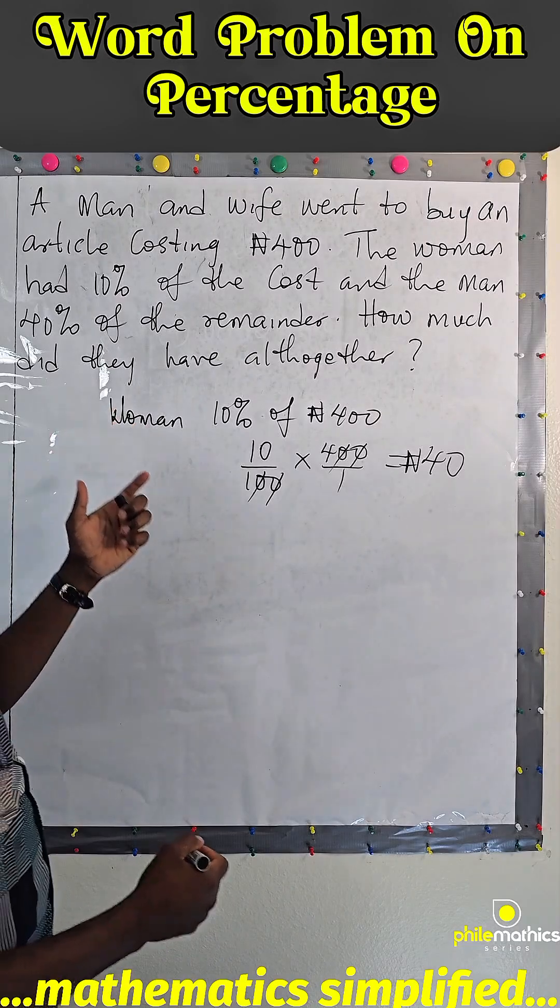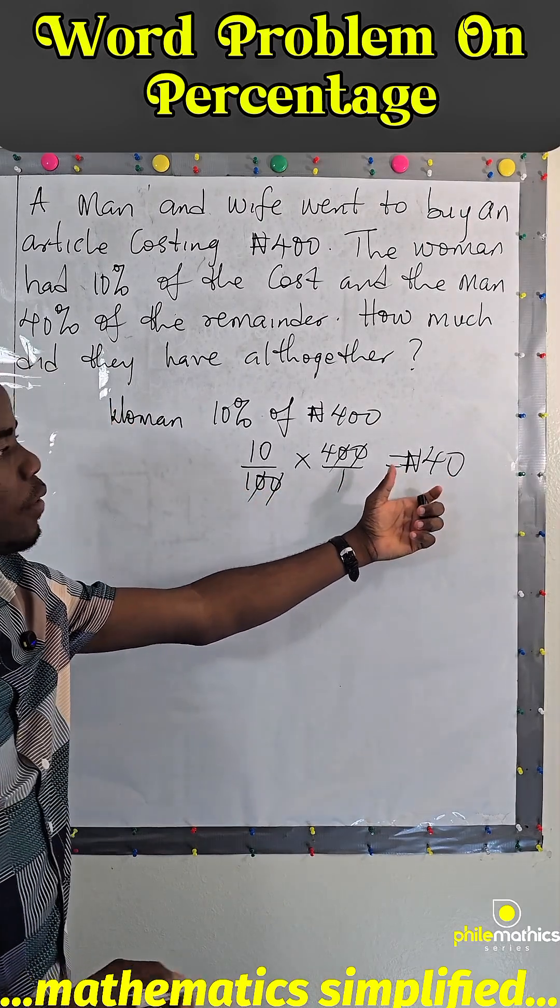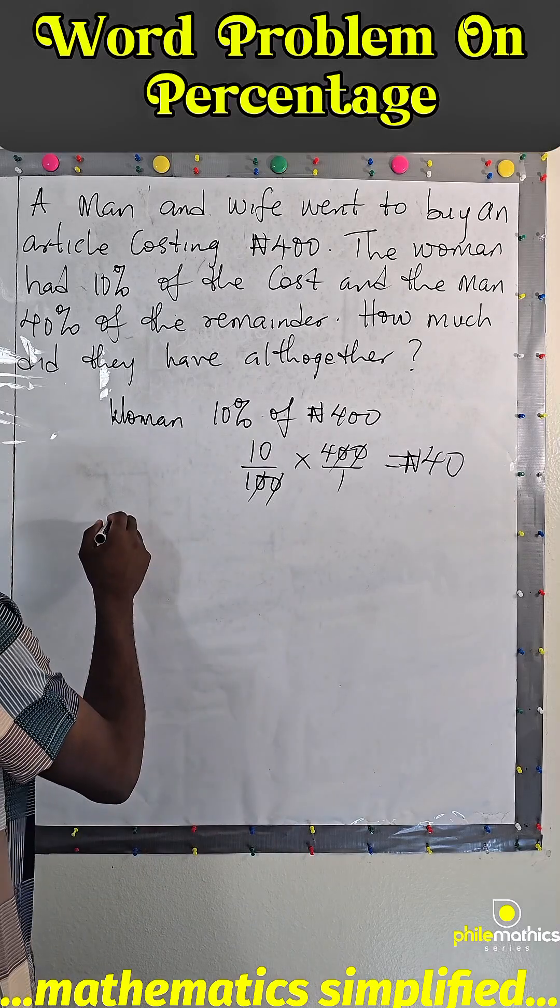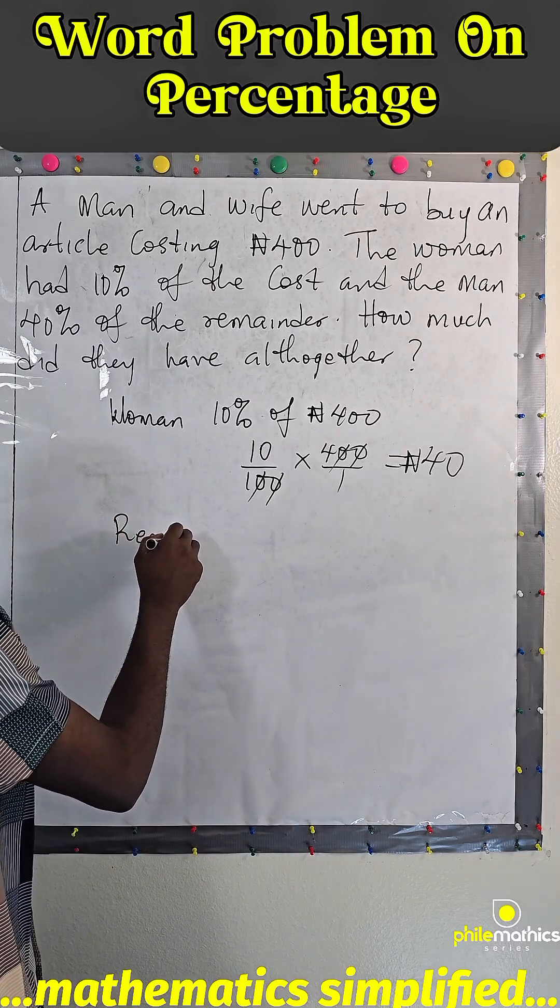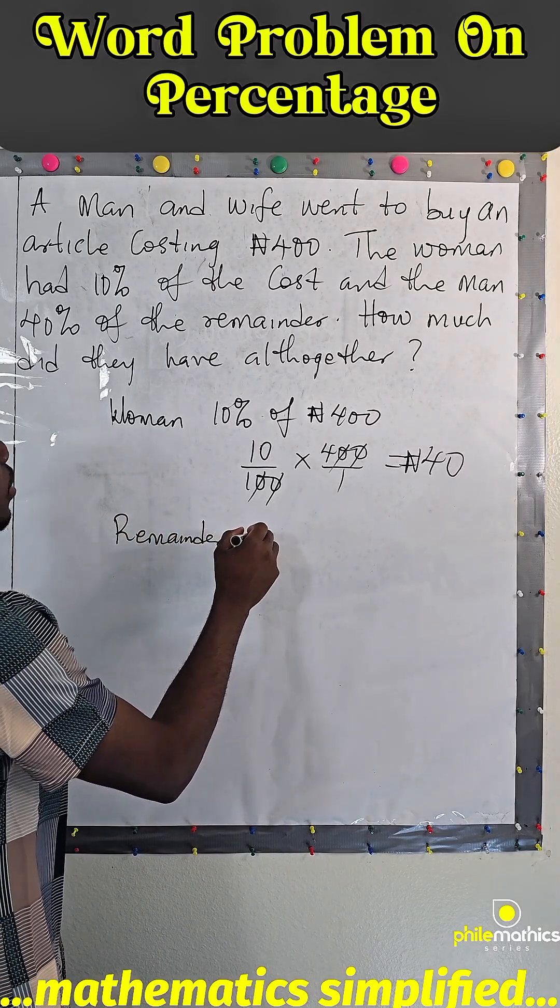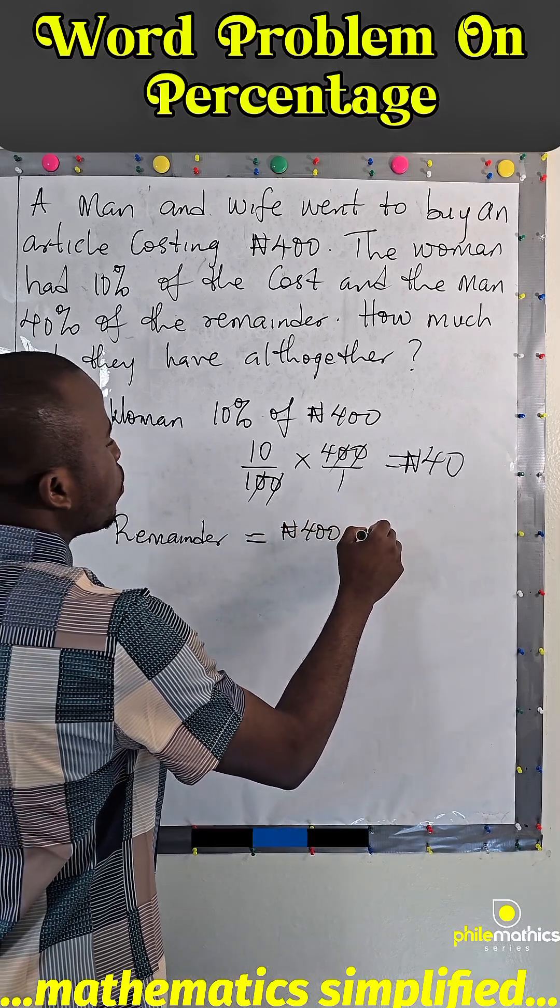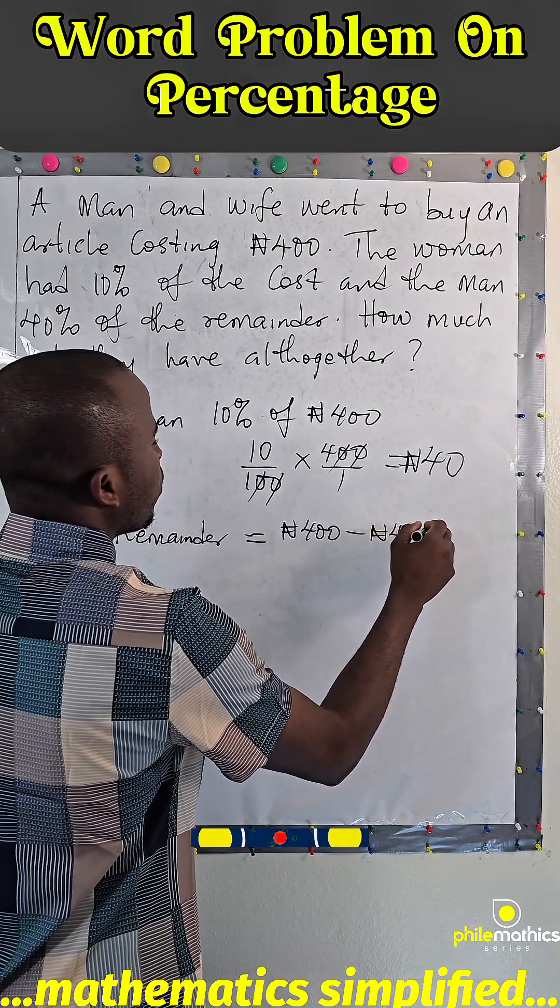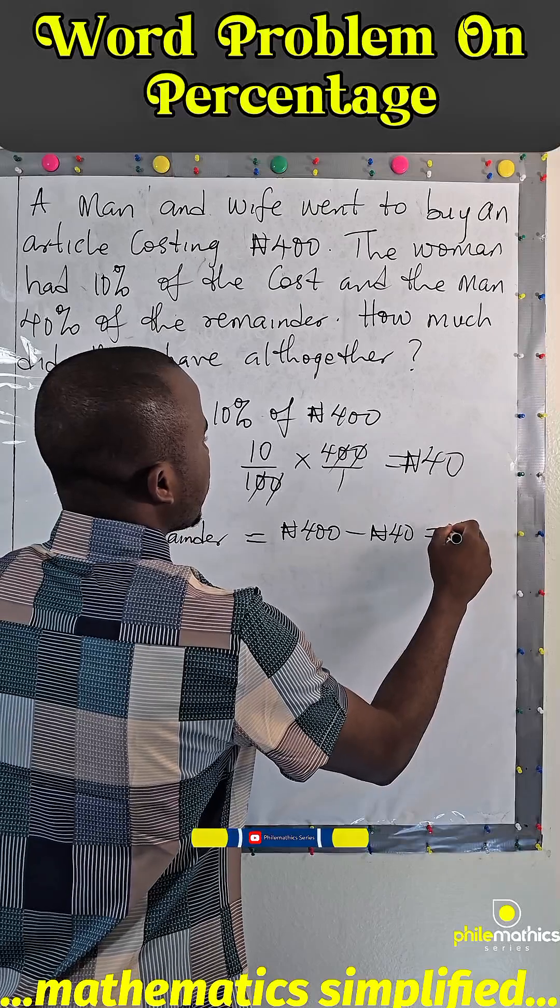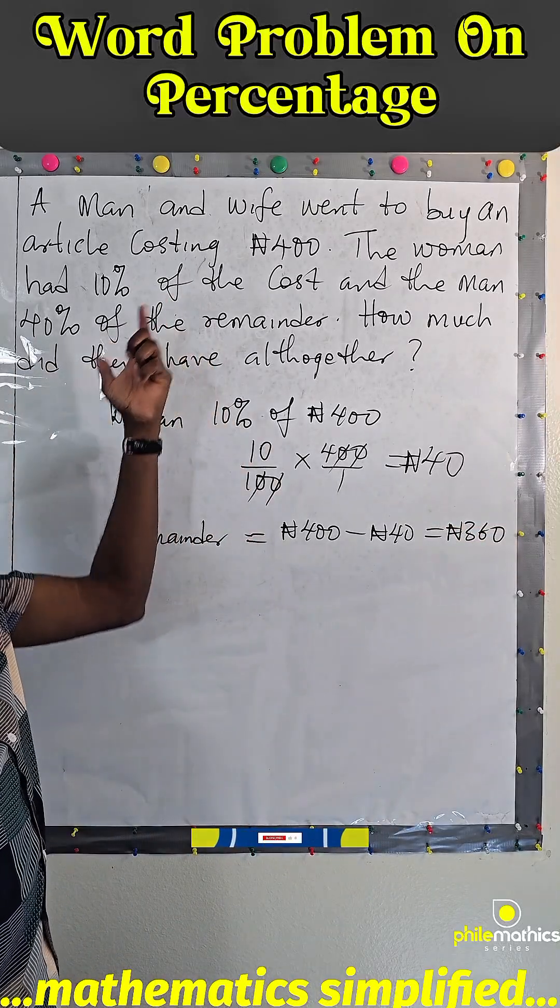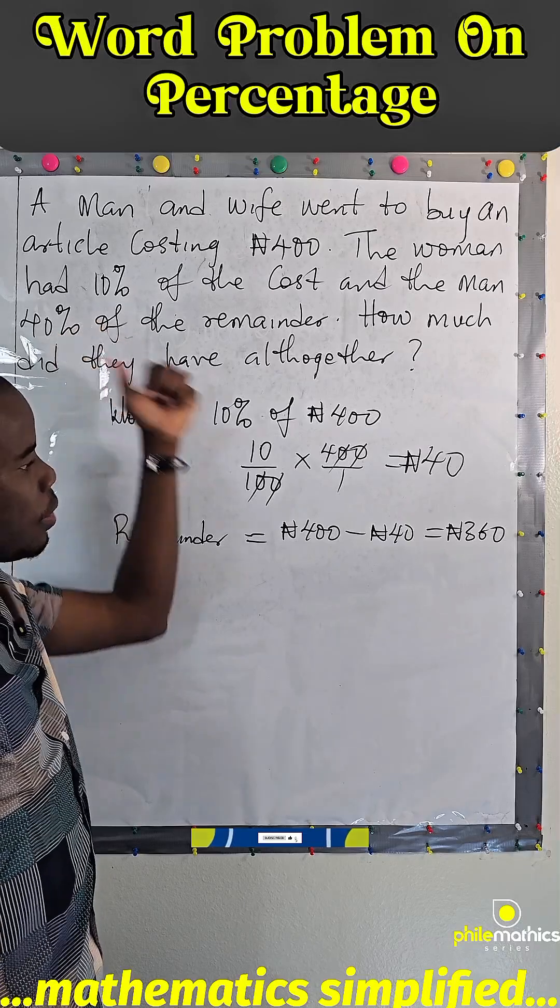And so we have to subtract this ₦40 from the cost to get the remainder. So the remainder is ₦400 minus ₦40, which is ₦360.